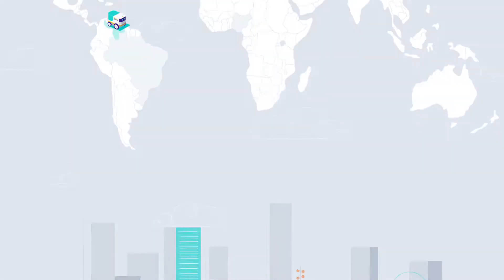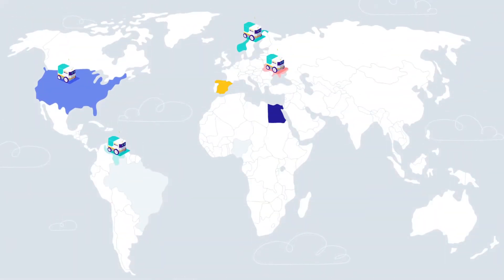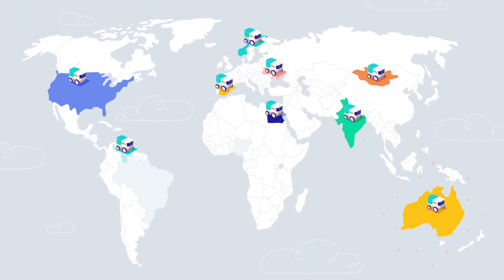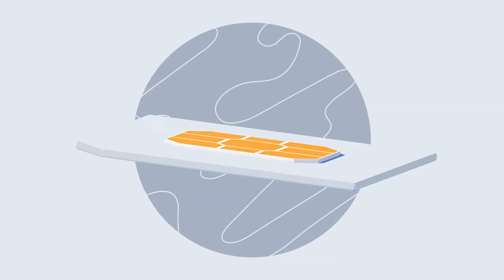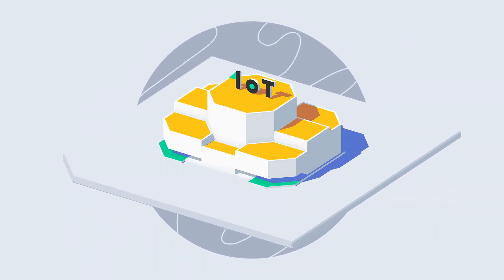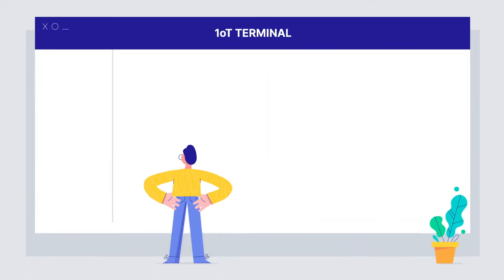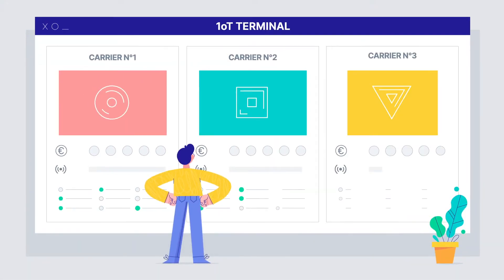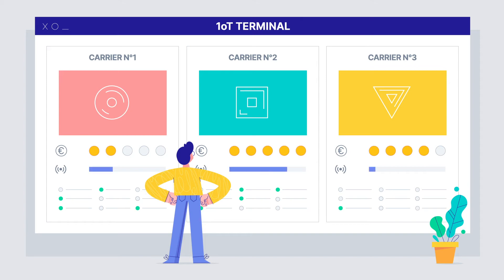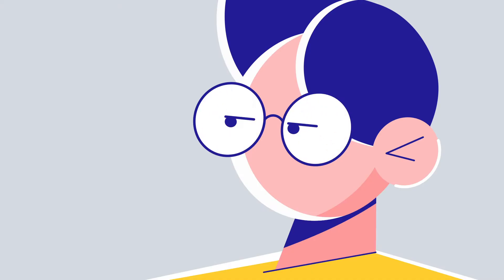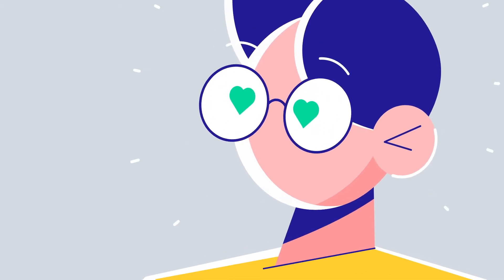This way, you can enter new markets and scale your business faster. To switch a carrier on your devices, all you need to do is log in to OneOT Terminal and use your comparison tool to compare carrier price and network coverage. Swipe until you score your perfect match.